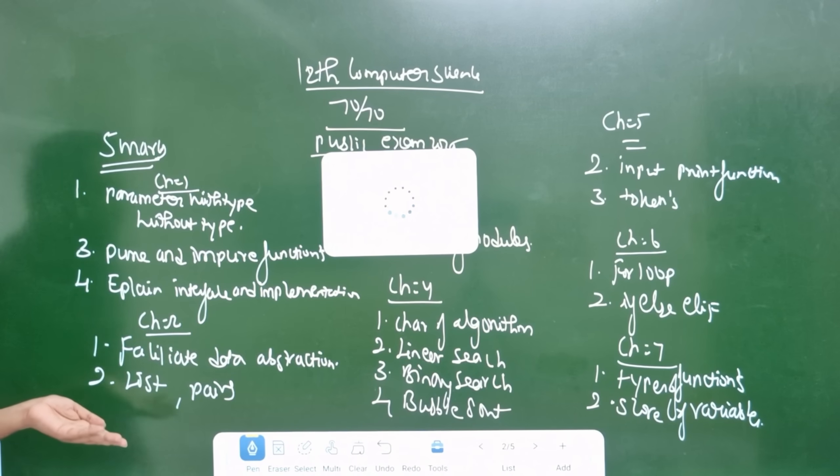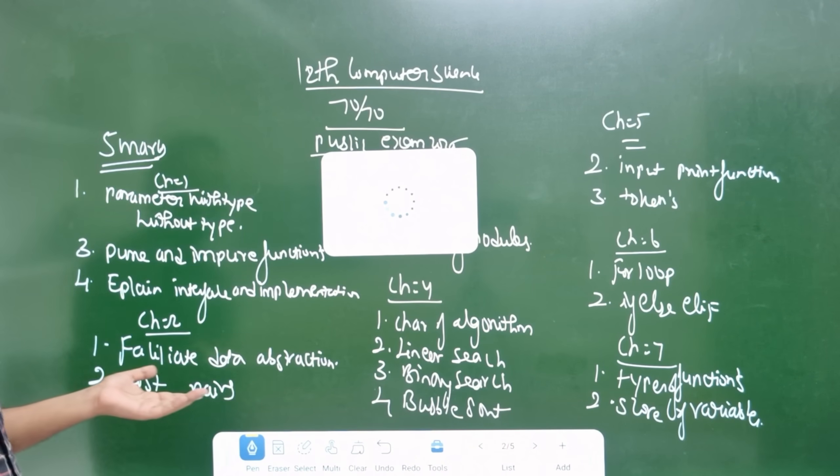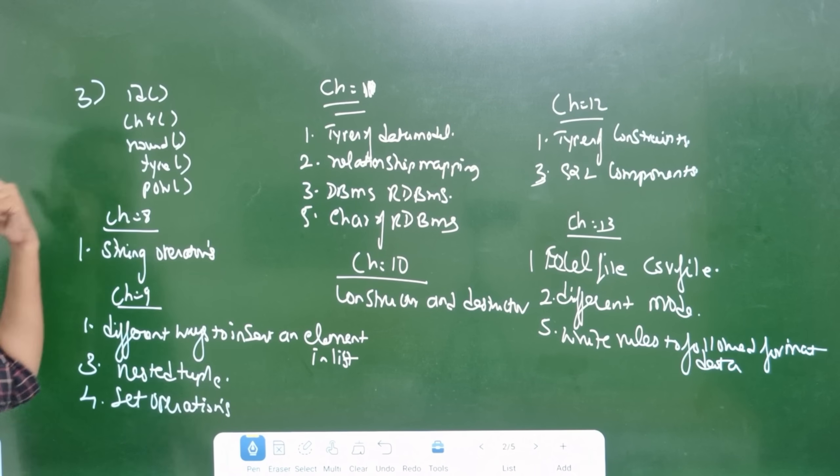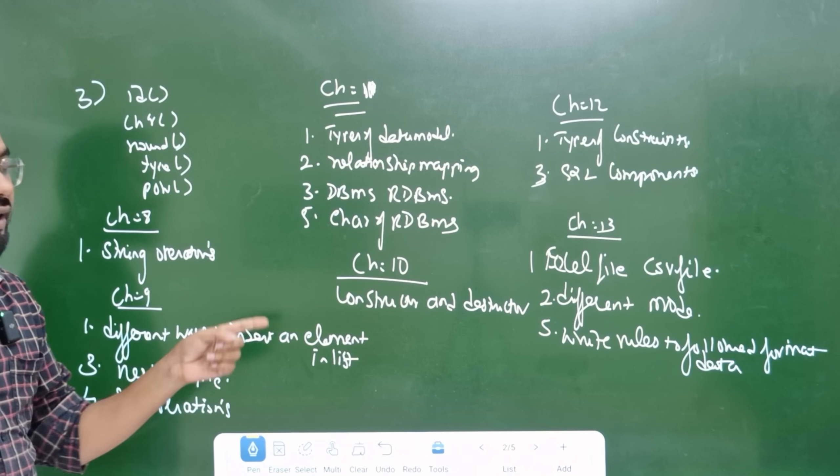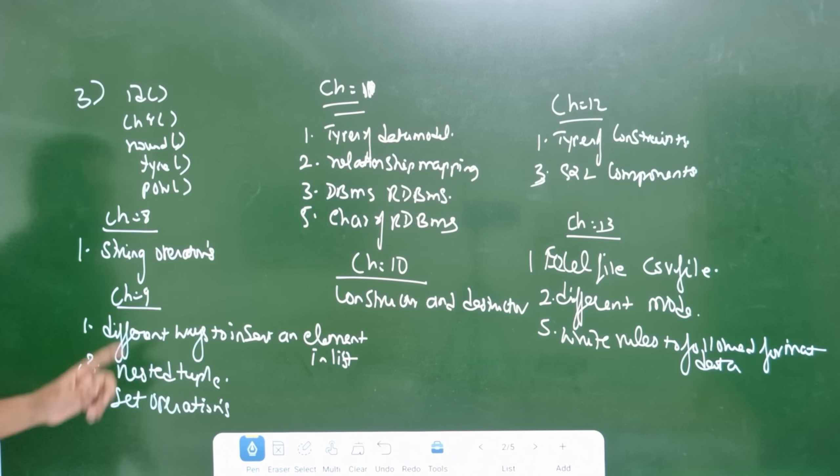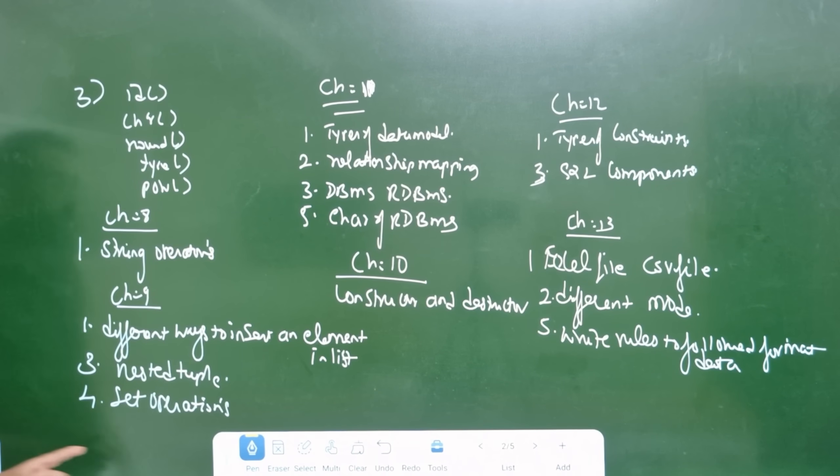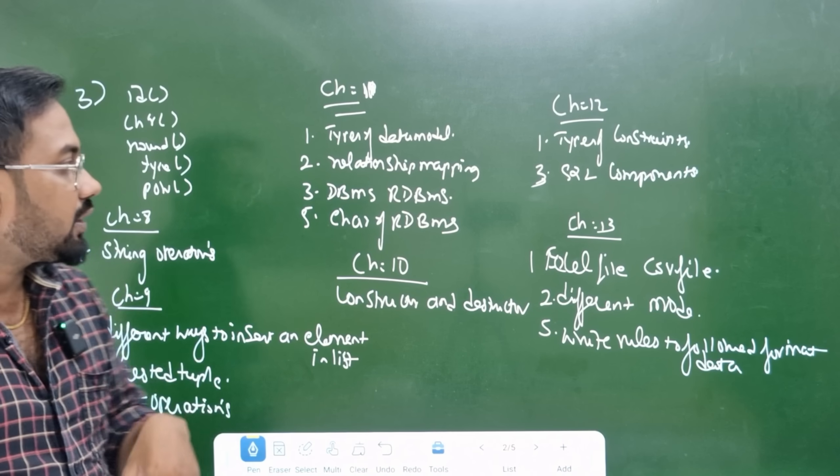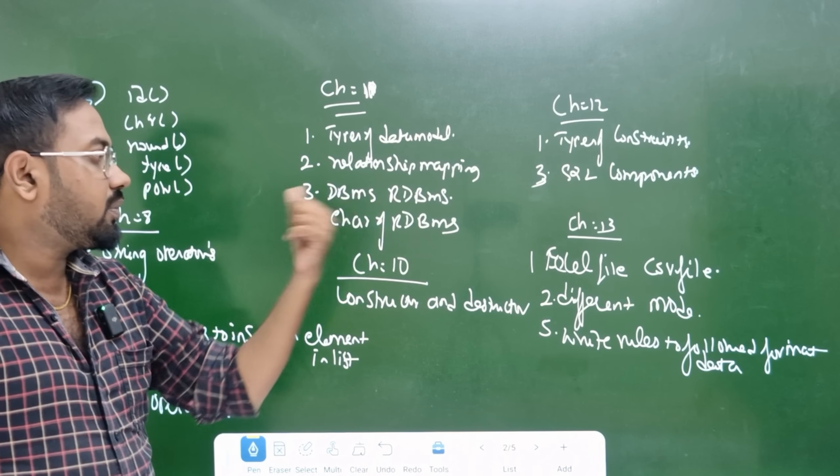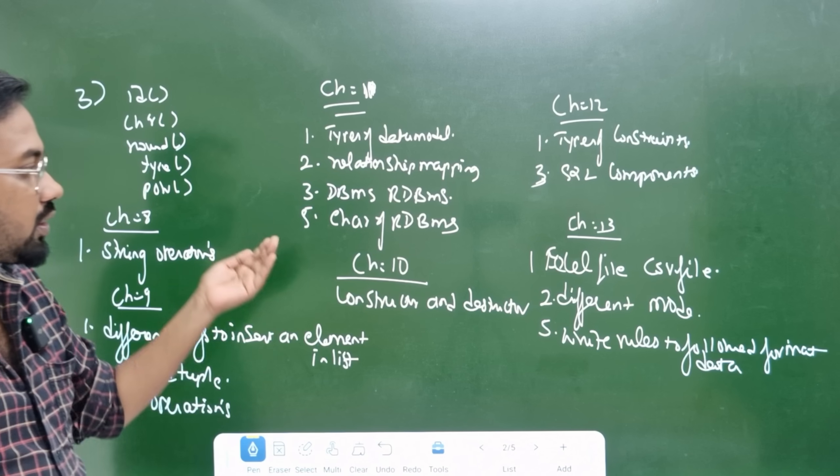All these things are important. Chapter 7 and 8 are very important. Chapter 9 covers different ways to insert and set operations. Types of data models, relational mapping, DBMS, RDBMS - very important. Characteristics of RDBMS as well.